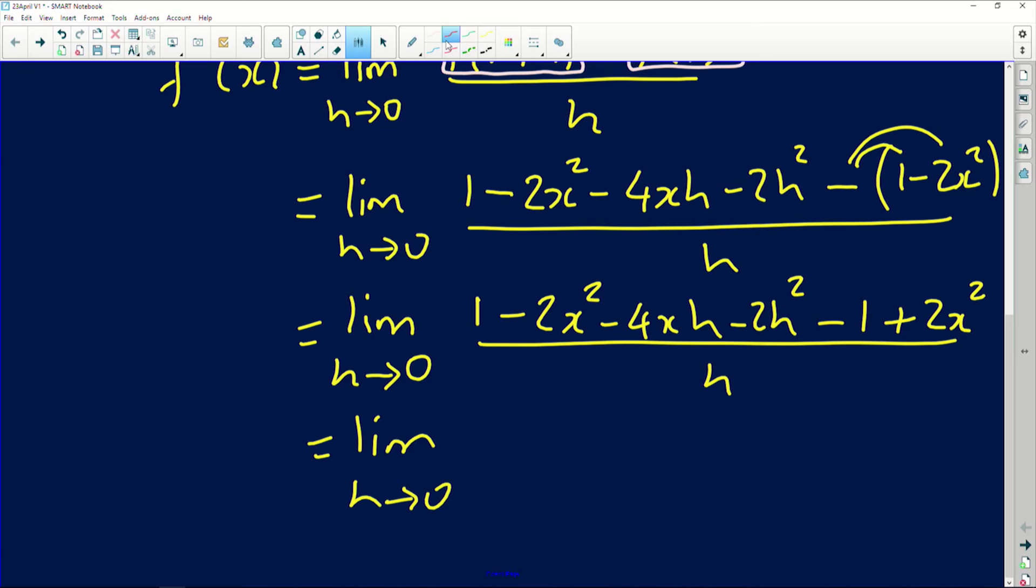If I simplify this further, what will happen? We're going to have the limit as h approaches zero. And let's see if there are any like terms that can actually simplify here. I've got a one and a one in the numerator. The one will cancel a one. I also have negative two x squared, which will also cancel two x squared, leaving us with minus four xh and minus two h squared all over h.